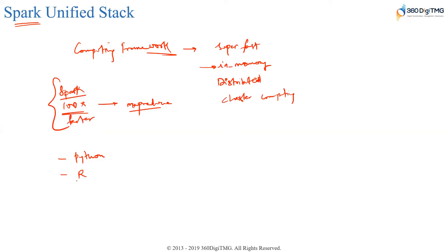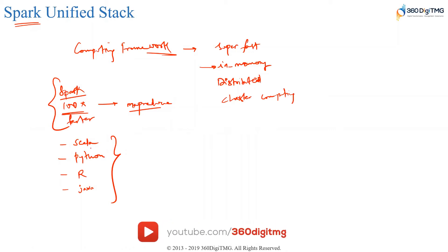Another advantage is language flexibility. Spark is known as polyglot — it works with Python, R, Scala, and Java. You are not learning new syntax; you write Spark code using languages you're already familiar with like Python or R. Though Spark was developed using Scala — a hybrid programming language — you can also write Spark programs in Java. These are the four programming languages that Spark understands. Remember, Spark is a framework, not a programming language.